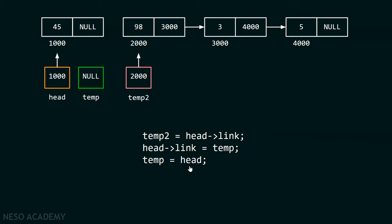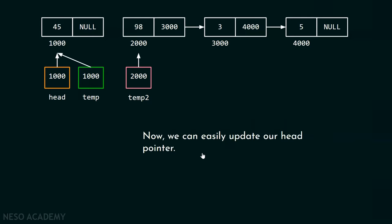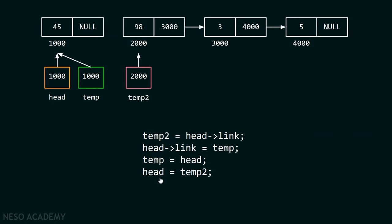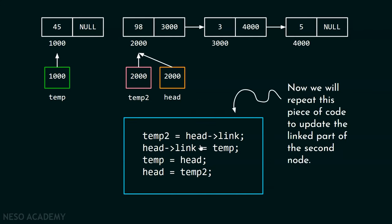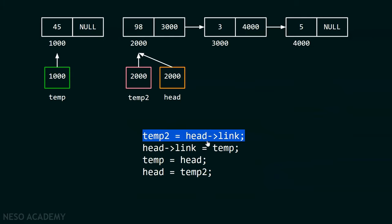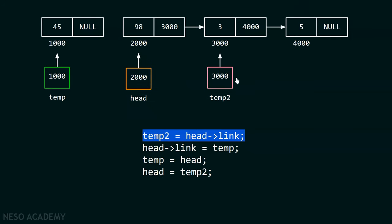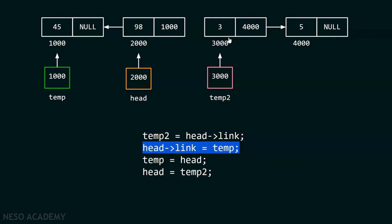We repeat this piece of code: temp2 = head.link (moves temp2 to the third node), head.link = temp (updates the second node's link to point back to the first node). Since temp2 is already pointing to the third node before we update the link, we never lose the reference to the third node. Then we update temp and head to advance.